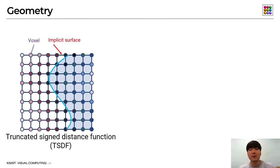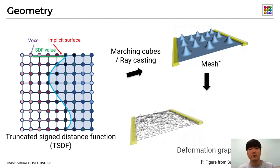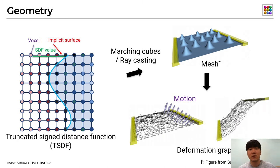We employ the truncated signed distance function to progressively update the geometry of a 3D object. Each voxel stores the truncated signed distance value, which is the distance between the surface and the position of the voxel. These values can be computed in parallel using GPU. The marching cube or ray casting algorithm is used to convert TSDF to an explicit geometry as a mesh. However, this method can represent the rigid shape of an object only. Thus, to represent the deformed object in motion, we build a deformation graph associated with the TSDF.